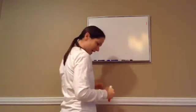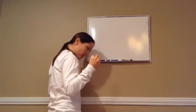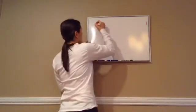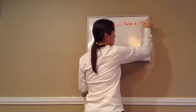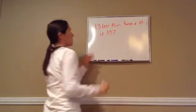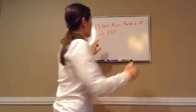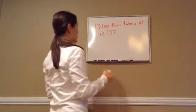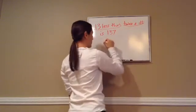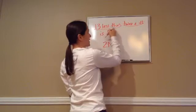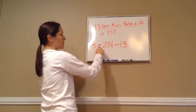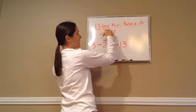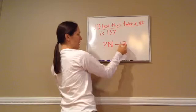Here's what it says: find a number such that 13 less than twice a number is 137. So, 13 less than twice a number is 137. 13 less than what? Twice a number. So we have twice a number — 2n — and then 13 less than that, minus 13.